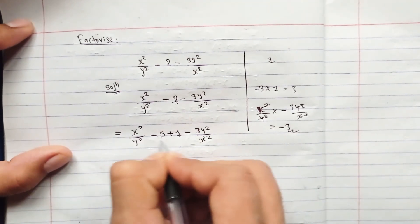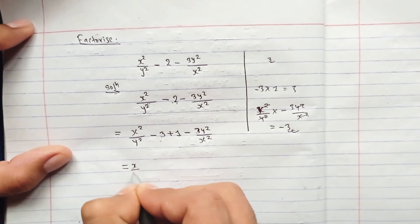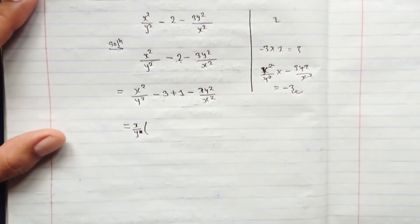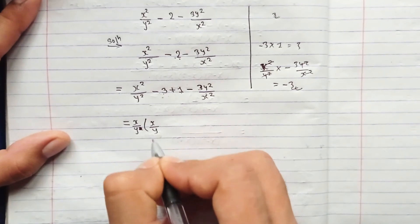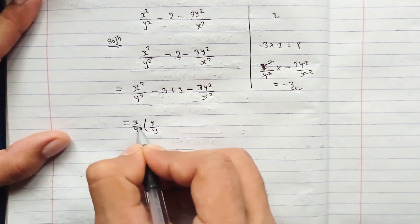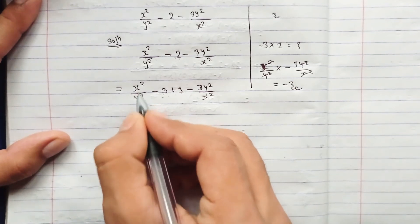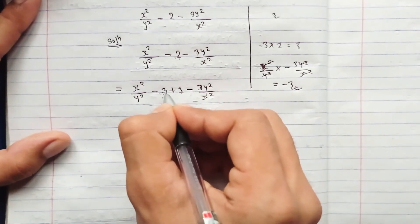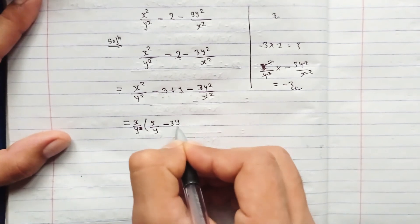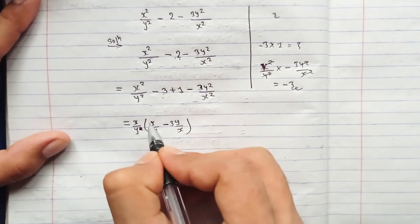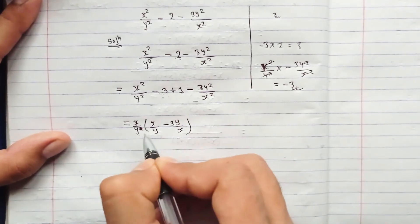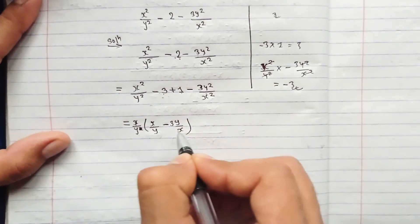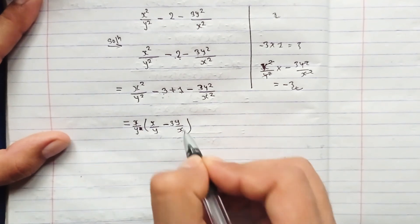From the first two terms, take x/y as the common factor. If you take x/y common, the remaining term is x/y. Multiplying these back: x times x gives x², y times y gives y², and the minus stays. So from the first pair you get x/y times (x/y minus 3y/x) — wait — taking x/y common leaves x/y; and x/y into 3y/x gives x and x cancel, y and y cancel, leaving 3.